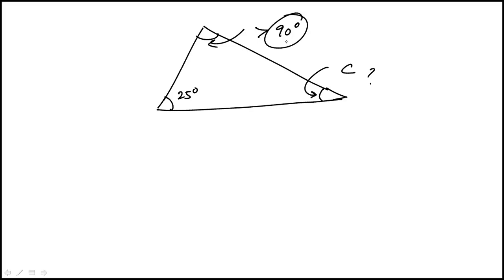So we know that if this was 90, these two would add up to 115. Because all three have to add up to 180, 180 minus 115 is equal to 65 degrees.